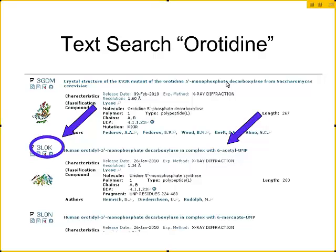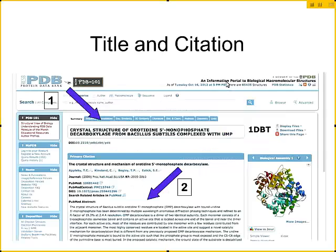You'll see a brief summary of each of the structures. Up here in the upper left-hand corner you'll find the PDB ID. You'll find the title of the structure and information about the method — these are mainly x-ray diffraction structures. You'll find some basic information about the authors and the resolution. You can click on either the title or the structure ID, such as 3L0K, and it will pull up the summary for that page.